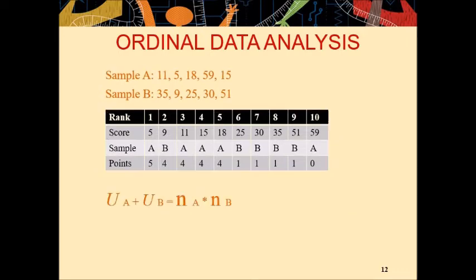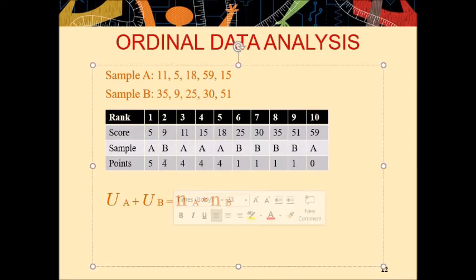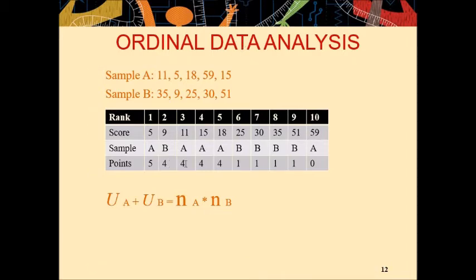So, this is the formula. UA plus UB is equal to NA into NB. UA is the sum of all points assigned to sample A. And UB is the sum of all points assigned to sample B. NA is the number of individuals in sample A. And NB is the number of individuals in sample B. We know that UA total points are 5, 9, 13, 17, and 0. The value of UA is 17. And value of UB is, you can simply calculate: 4, 4, 5, 6, 7, 8. And UB has a value of 8. And the number of individuals in each sample are 5. 5 individuals in sample A and 5 individuals in sample B.